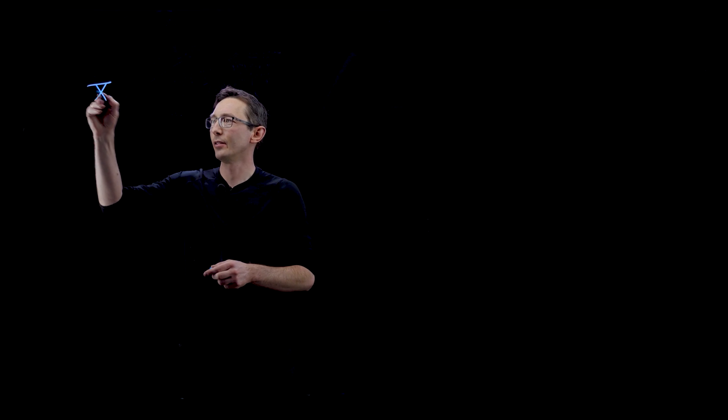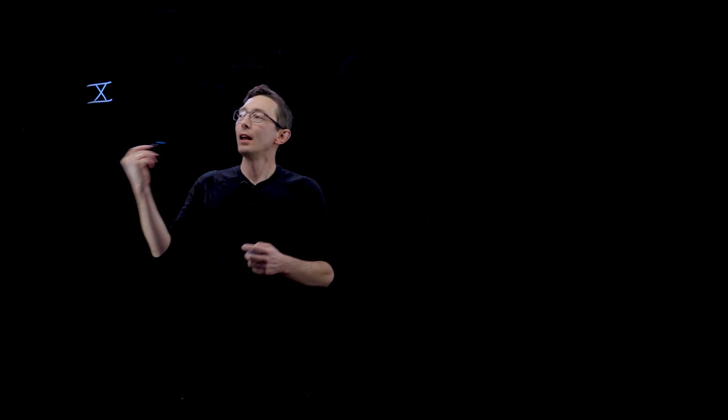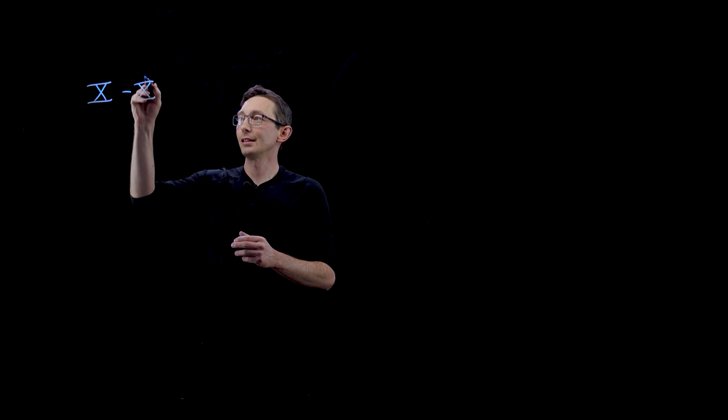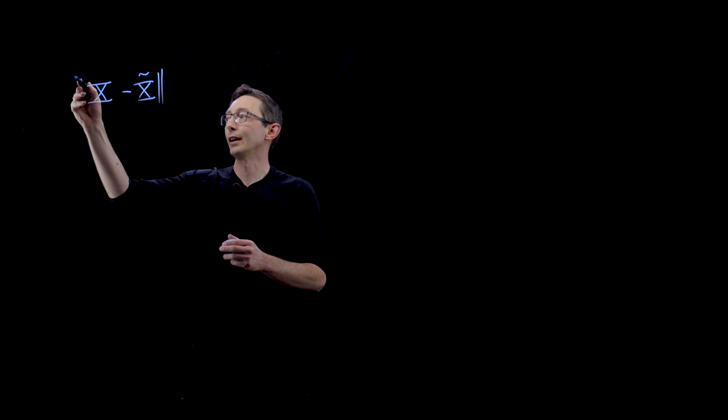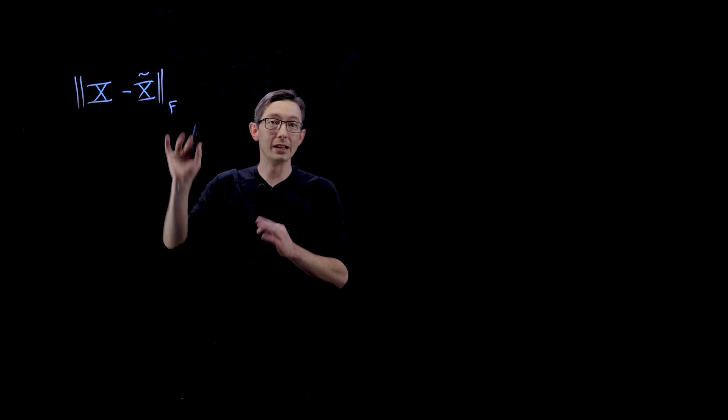Welcome back. So I told you about the Eckert-Young theorem, which basically says that if you have a matrix X, then the absolute best rank R approximation X tilde that you're possibly going to find in the Frobenius norm...